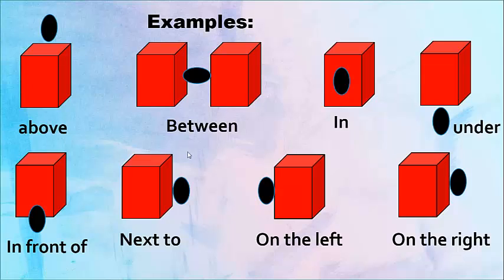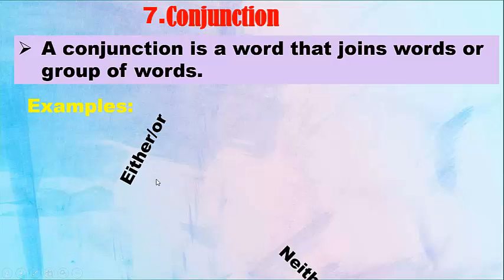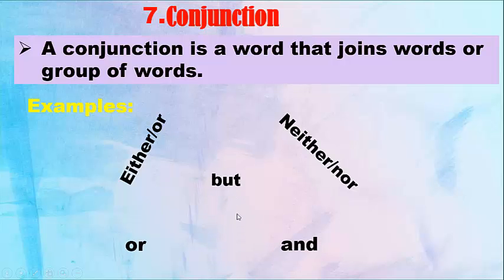Conjunction: a word that joins words or groups of words. Examples: either, or, neither, nor, but, or, and, for.